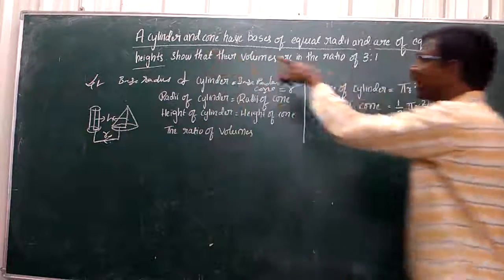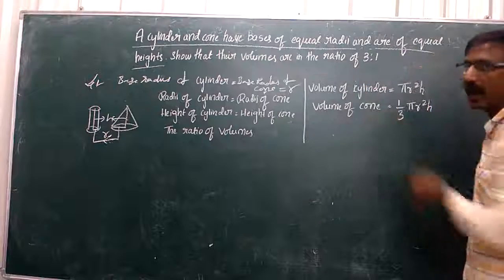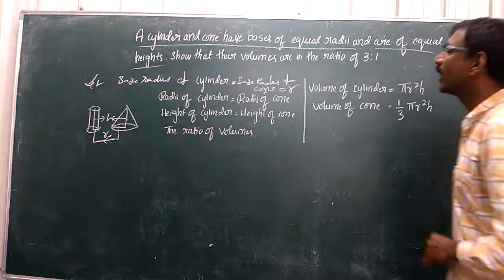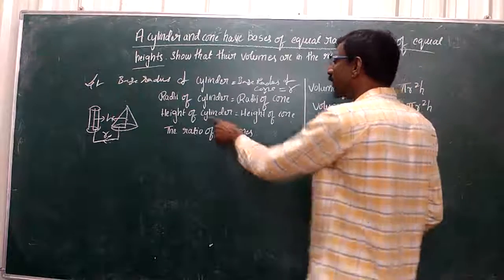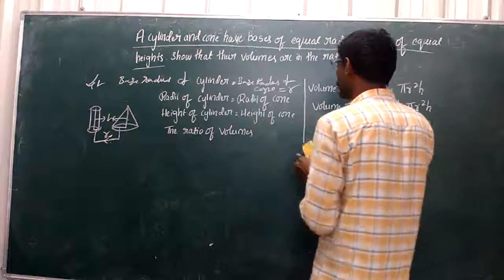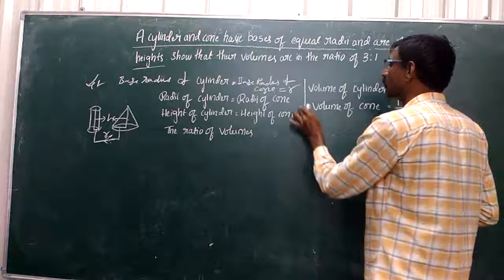So the cylinder and cone have a base of equal radii and equal heights. The height of the cylinder and height of the cone are equal.